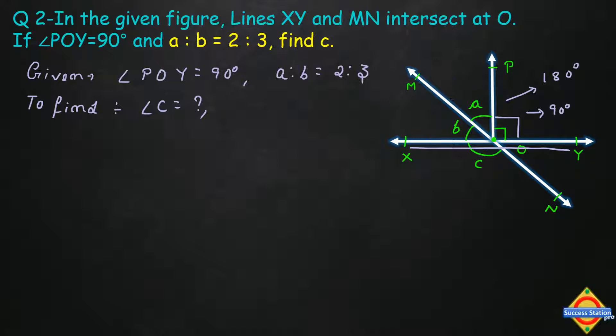Look at angle POX - it is divided into two parts, the first part is angle A and the second part is angle B. So it means angle A plus angle B equals 90 degrees. Since angle POY is equal to 90 degrees, therefore A + B will be equal to 90 degrees.